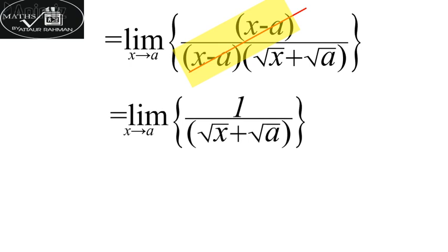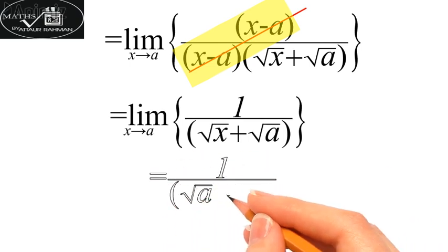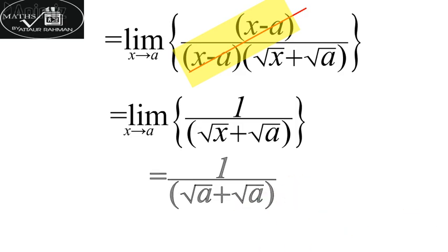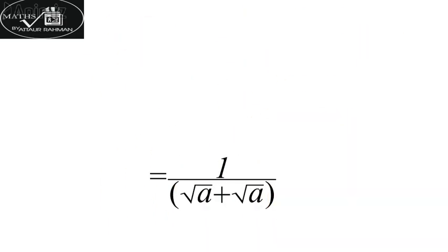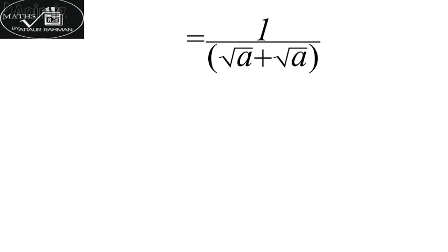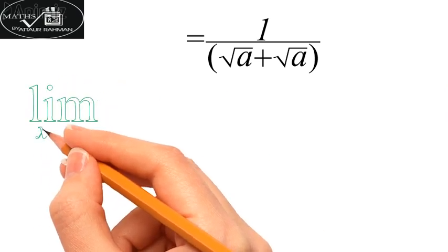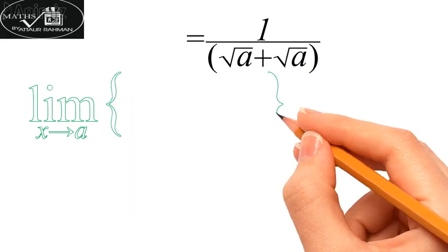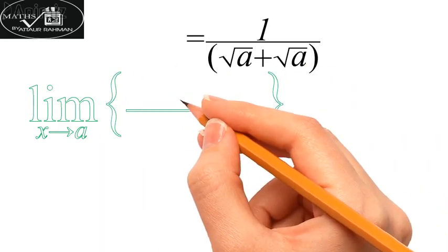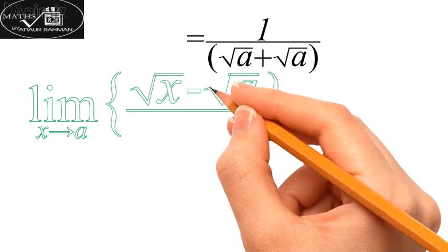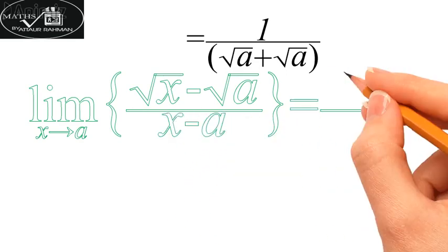Now we are in the position to apply the limit to the function. Thus the limit as x tends to a of (√x - √a)/(x - a) converges to 1/(2√a).